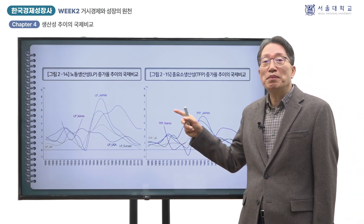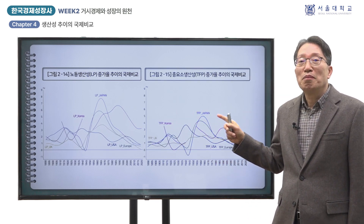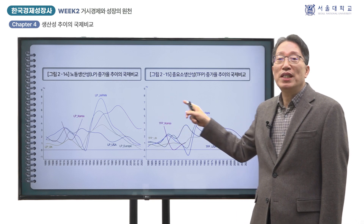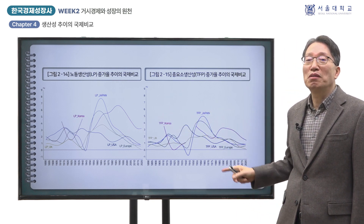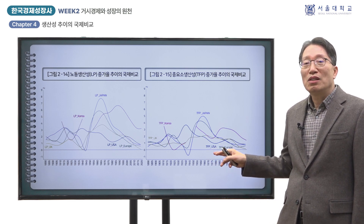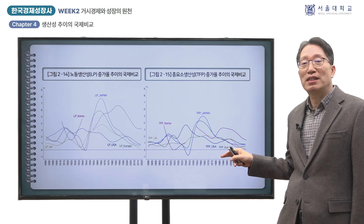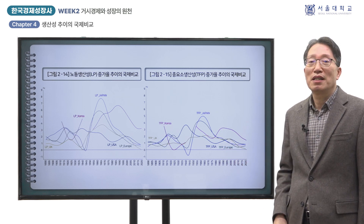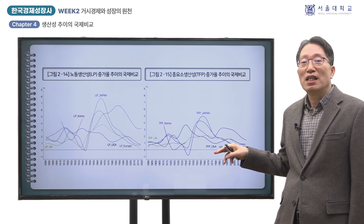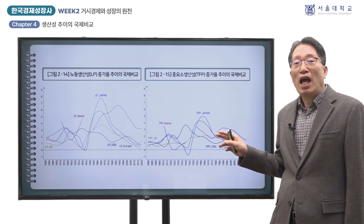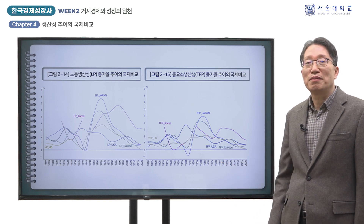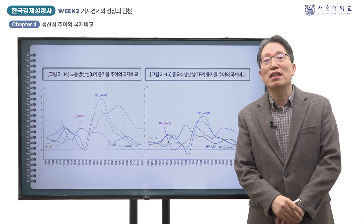그림 2-14와 그림 2-15는 미국, 영국, 유럽, 일본의 LP와 TFP의 장기 추이에 한국을 추가해서 보인 것입니다. 주요 국가의 장기 생산성 추계는 롱텀 프로덕티비티 데이터베이스의 업데이트된 버전을 이용하였습니다. 여기에 제시된 LP와 TFP의 증가율 추세는 헤들릭-프레스코트 방법으로 주기적 변동을 제거하여 평탄화된 결과를 제시한 것입니다.